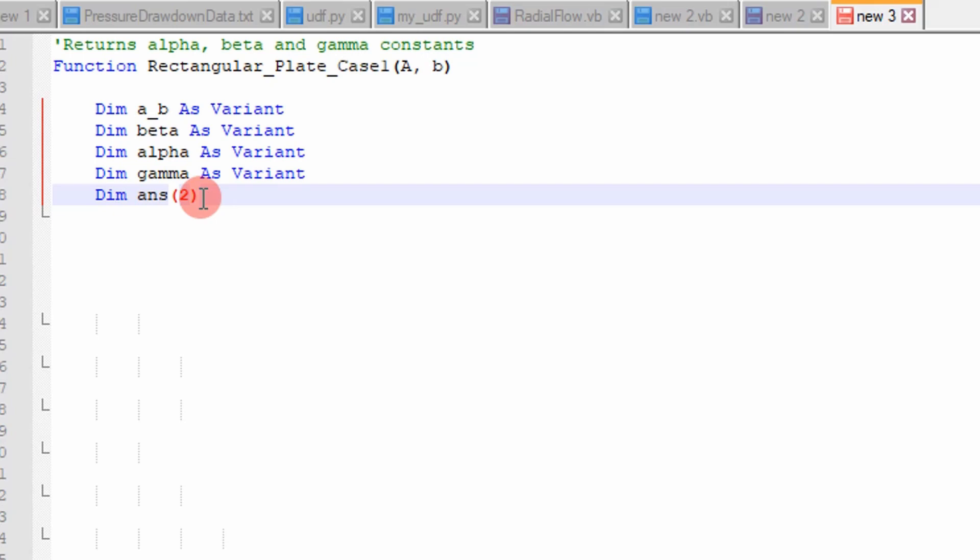And if you remember in Excel, the index starts at zero. So if I specify an array of two, that's going to include zero, one, and two. So that's three values. So just FYI.